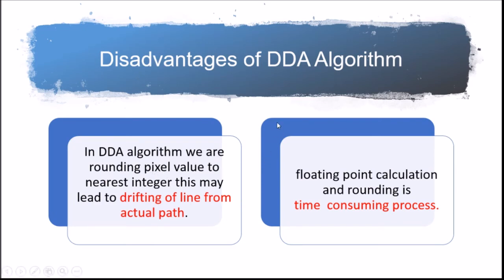So you are rounding the pixel, so the line may drift from actual path. And the second disadvantage is you are doing floating point calculations and rounding, so it will be a time-consuming process. Those are the disadvantages of DDA.